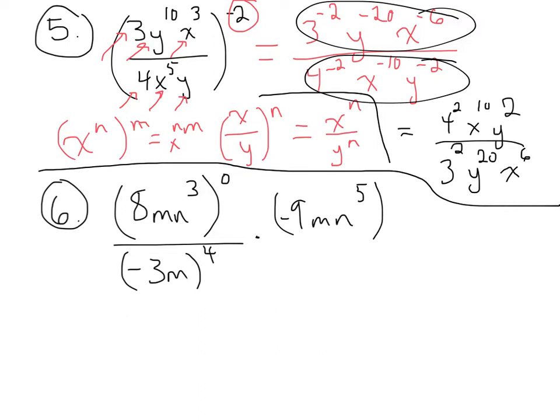In number 6, the first thing I notice is we have a 0 exponent. The rule there is that anything raised to the 0 power, or an exponent of 0, just equals 1. So I can rewrite this whole first fraction as 1 over negative 3m to the 4th, and then we'll have times negative 9mn to the 5th.